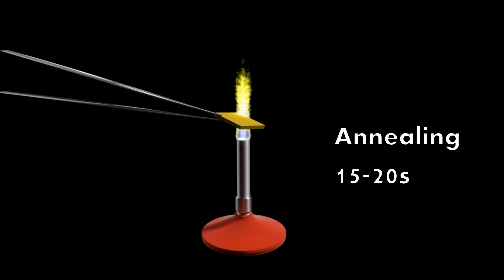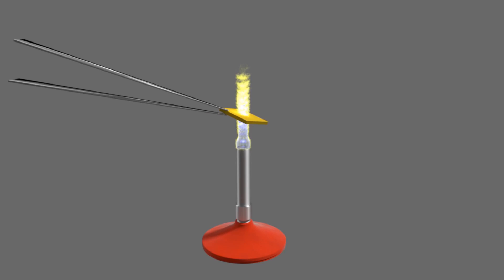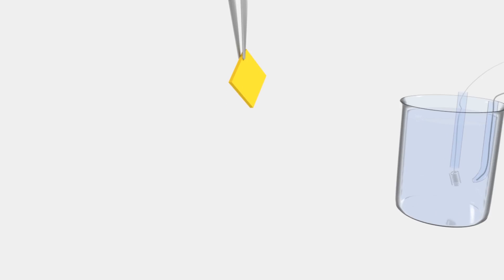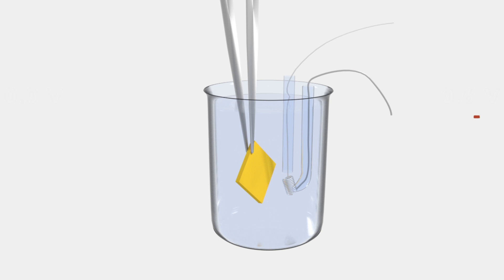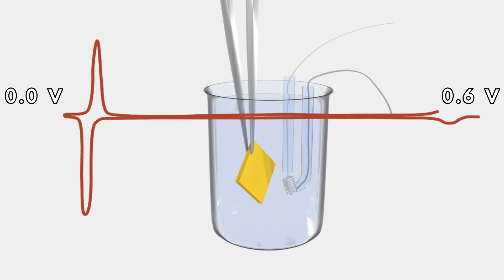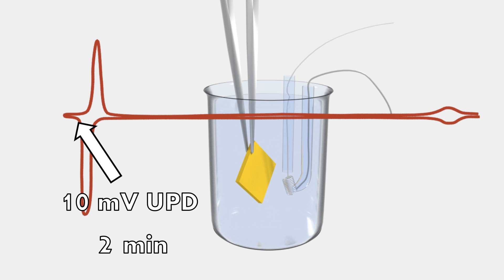After that, it's flame annealed 15-20 seconds. Then, it's immediately immersed into our chemistry cell, where we check the quality of the substrate with a cyclic voltammogram, and if all looks good, under potential deposition is performed.